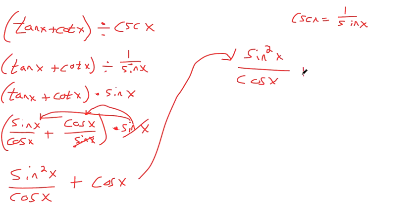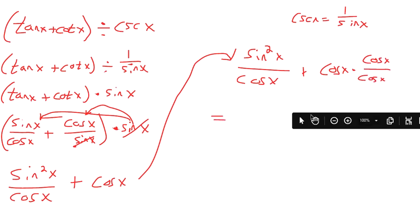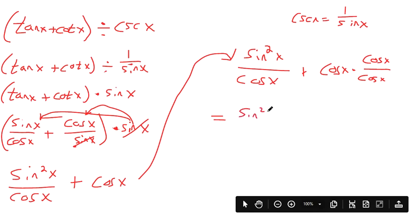I was copying it down. So look. I can multiply this by one in the form of cosine x over cosine x. That way, we have common denominators. So sine squared x over cosine x.